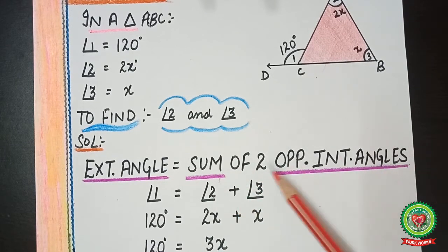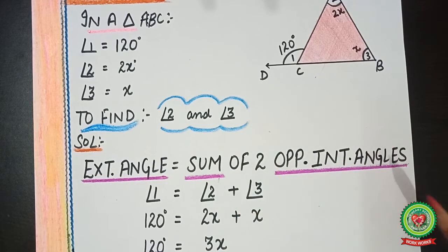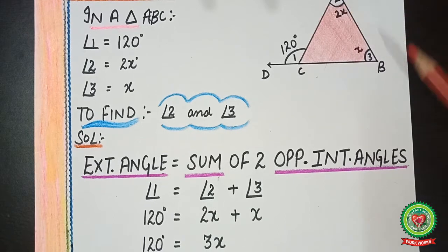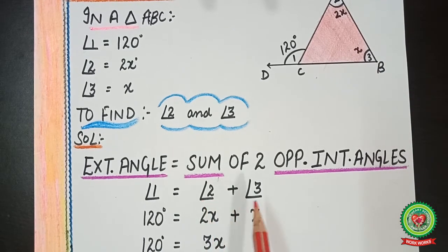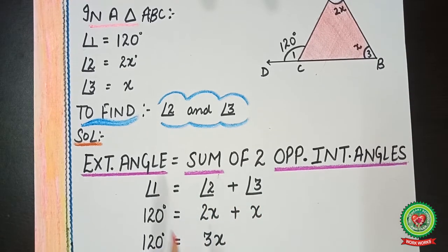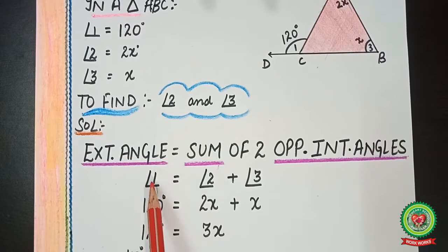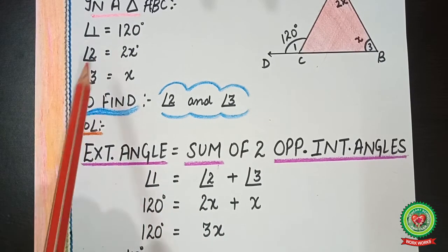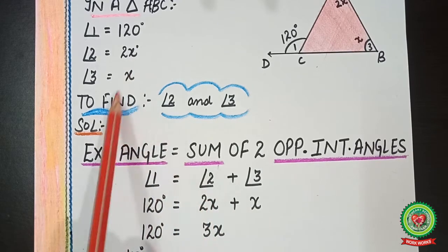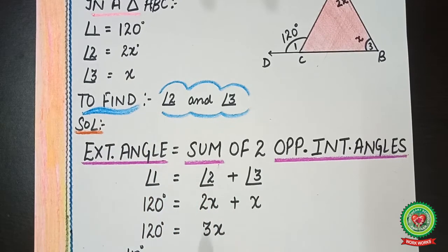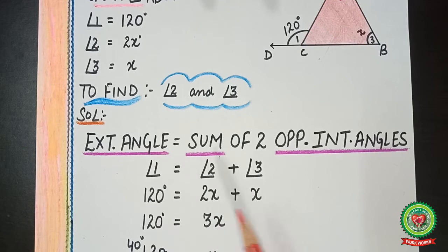So we write: angle 1 = angle 2 + angle 3. The value of angle 1 is 120°, angle 2 is 2x, and angle 3 is x. Therefore: 120 = 2x + x, which gives 120 = 3x.